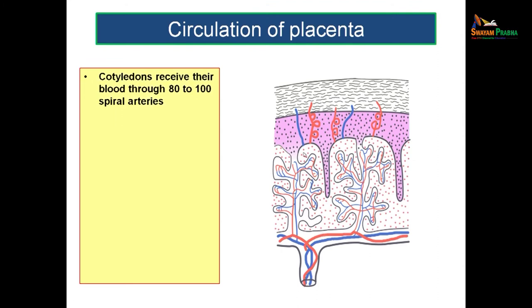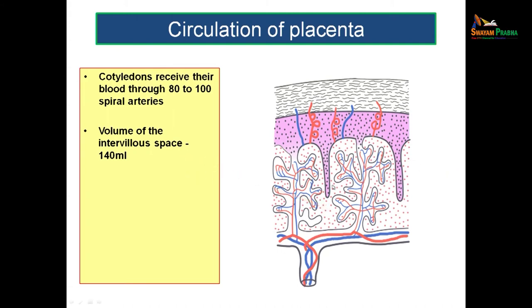Maternal cotyledons receive blood through 80 to 100 spiral arteries feeding the placenta. The volume of the intervillus space is roughly 140 ml, and 500 ml of blood circulates through the intervillus space per minute — meaning it circulates approximately 4 times per minute.